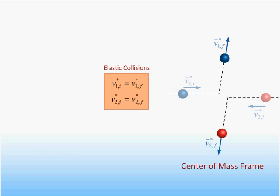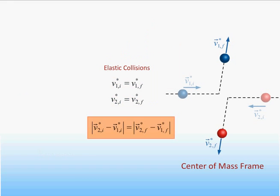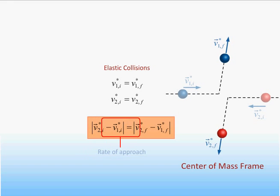Since the speed of an object before and after an elastic collision is the same if viewed in the center of mass frame, it is also true that the relative speed of the two objects is the same before and after the collision in this frame. That is, the rate at which two objects approach each other before an elastic collision is the same as the rate at which they separate afterward.